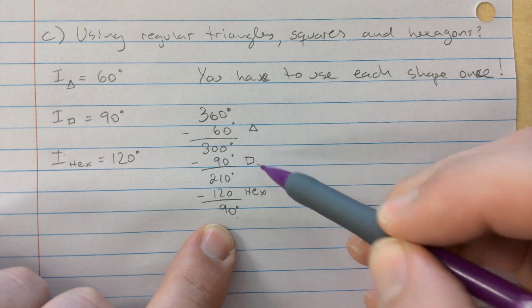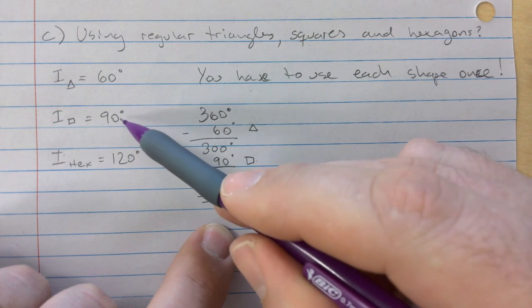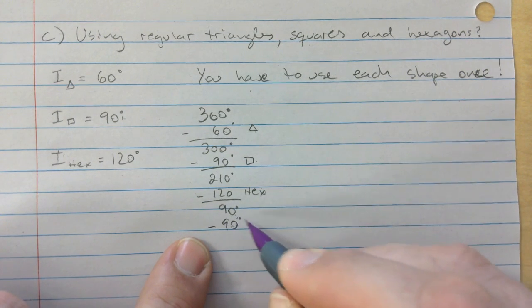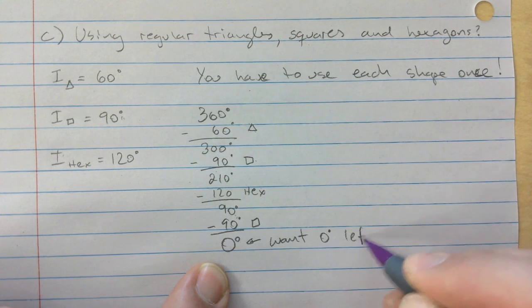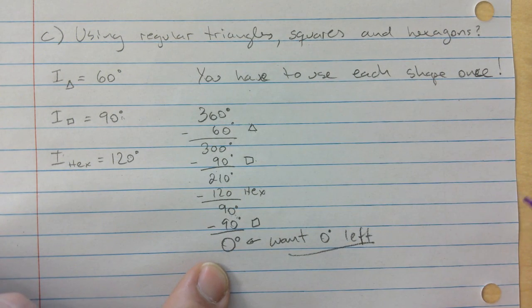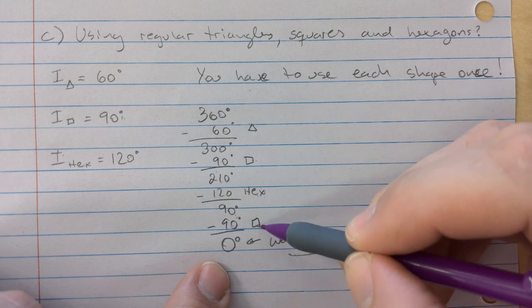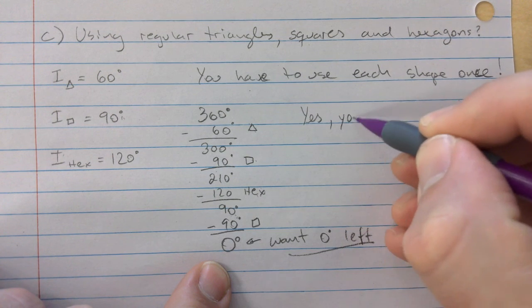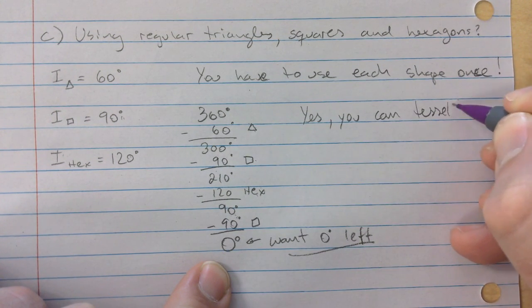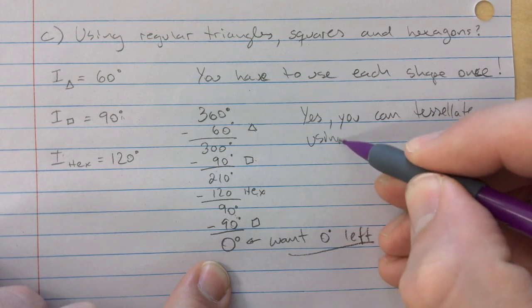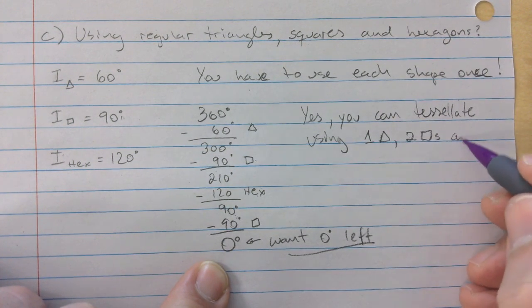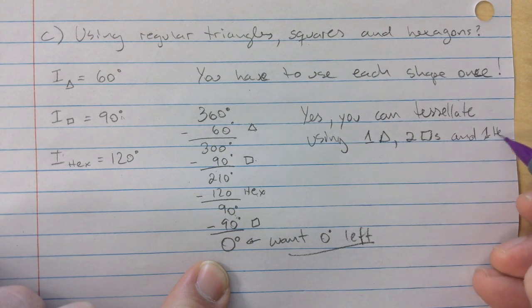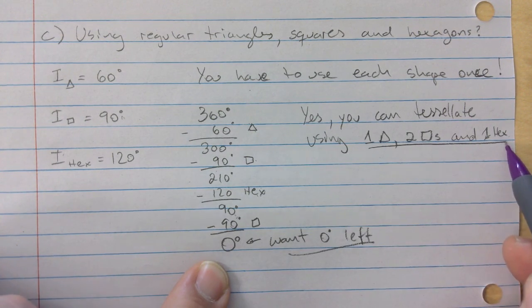If you were to use a triangle, a square, and a hexagon, you still have 90 degrees left to cover. And there it is, the square will do the trick. So minus 90, which is the square, you're left with zero, that's what you want. You want zero degrees left. So we've just answered two things. Yes, you can tile a floor using these three shapes, and also the combination. So you can tessellate using one triangle, two squares, and one hexagon. You have to use a combination of that every time.